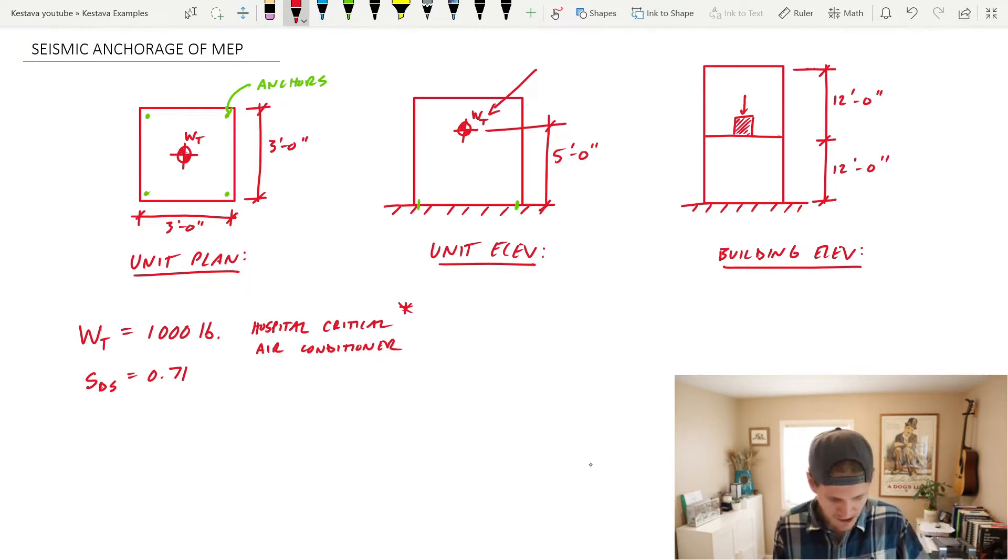We have an SDS of 0.71, and since this unit is indoors, we are only going to be looking at anchorage design for seismic. If it was on the roof or exposed to the elements, you would need to look at both cases between wind and seismic. Today we're just indoors.